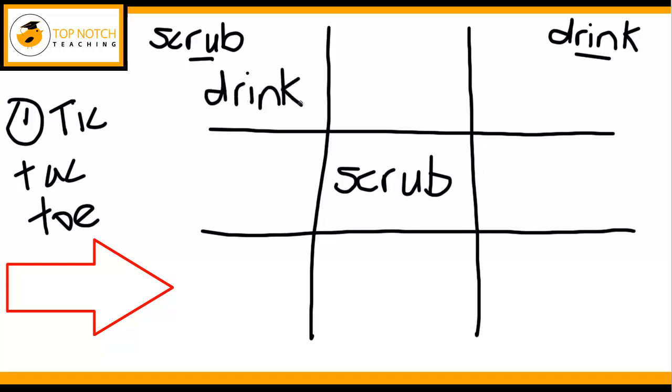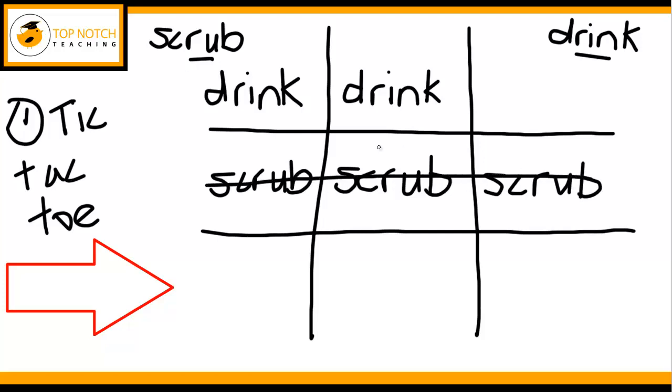And then hopefully one of them will get three in a row. And with my students I also like to get them to say the sounds as they're writing the word. So we would go D, R, I, N, K, drink. S, K, R, A, B, scrub. And the student wins when they have three in a row.